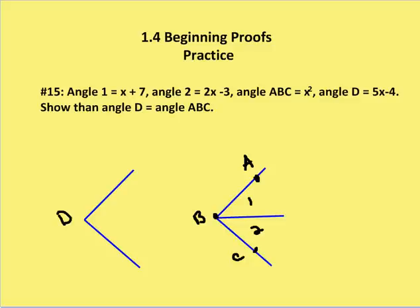We're asked to show that angle D is equal to angle ABC. So we're going to set up, we know that angle 1 and angle 2 are equal to angle ABC.